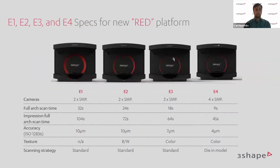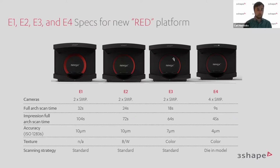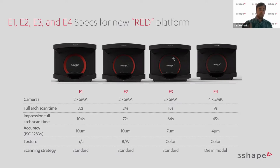Looking at the specs across the whole NOVOX Red e-scanner portfolio: our entry-level scanner, the e1, is around 30 seconds of scan time per arch — a great improvement in speed compared to older models. All the way up to the latest e4 scanner at nine seconds of scan speed. All four models are very fast, and the e4 is the market leader in scanning. On top of that, we have fast impression scanning, very accurate scans down to four microns with the e4, plus color scanning capabilities.